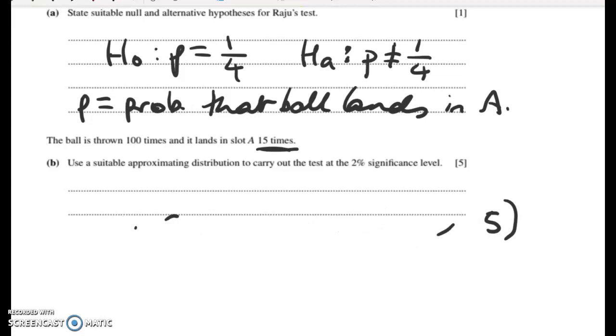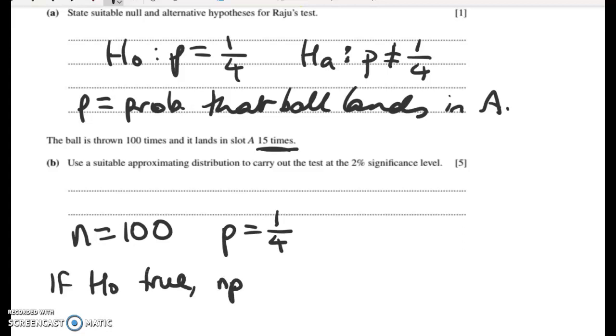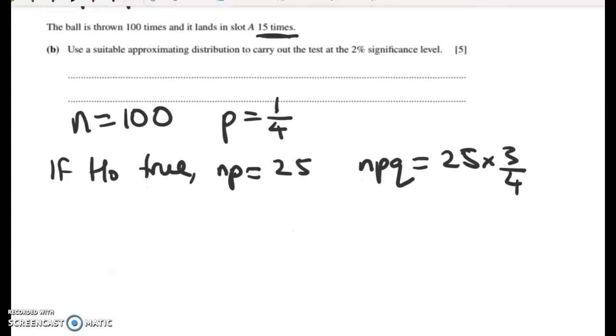We're going to use a normal distribution as an approximation. Okay, so when we do a normal distribution, we're going to be doing a Z test. We've got 100 throws, and if the null is true, then P is equal to one quarter. So if H naught true, then NP is going to be 25, and the variance is going to be NPQ, which is 25 times three quarters, and that gives me 75 over 4.